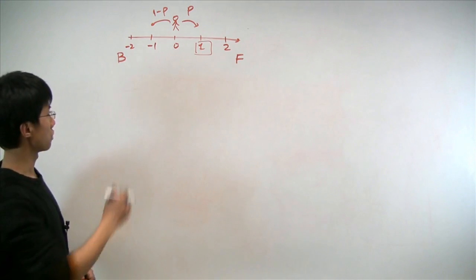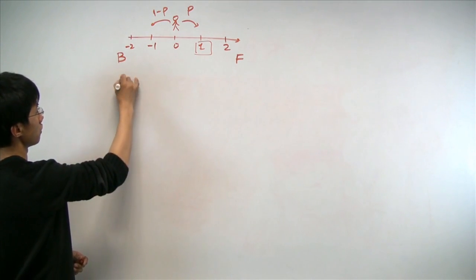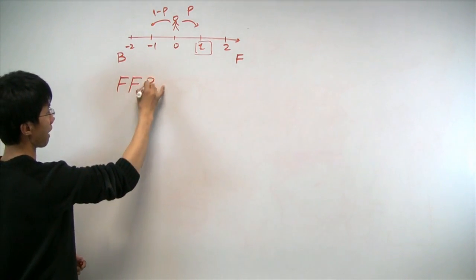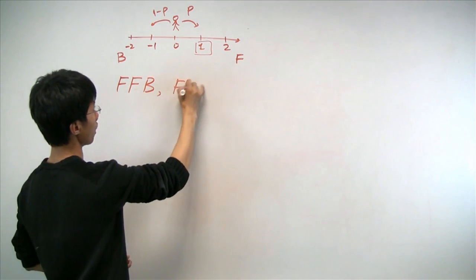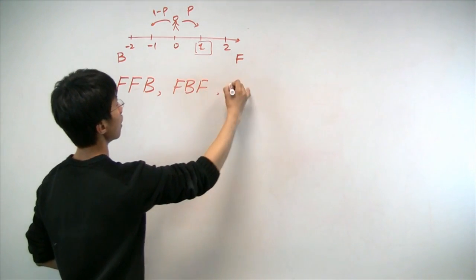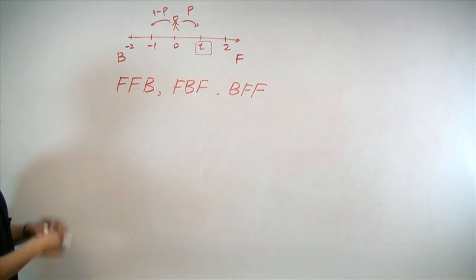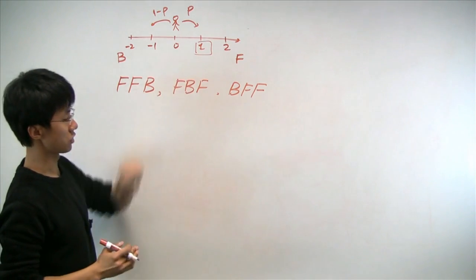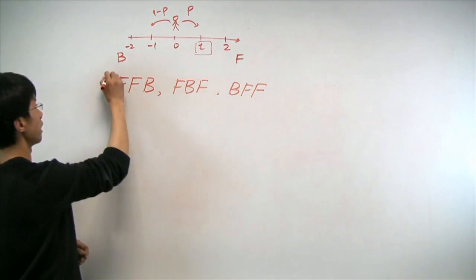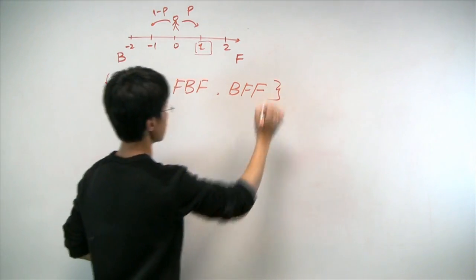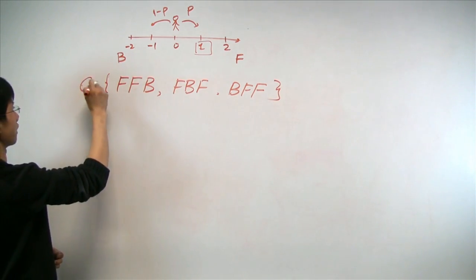To do so, there again are three possibilities, in which we go forward, forward, backward, or forward, backward, forward, or backward, forward, forward. And that exhausts all the possibility that the person can end up in position 1 after three steps, and we'll define the collection of all these outcomes as event C.